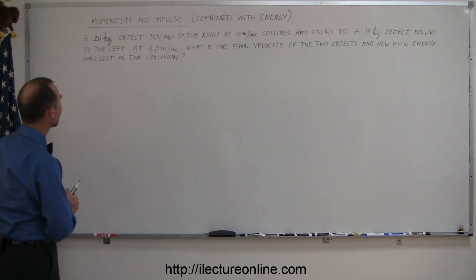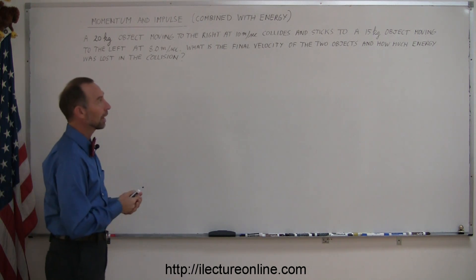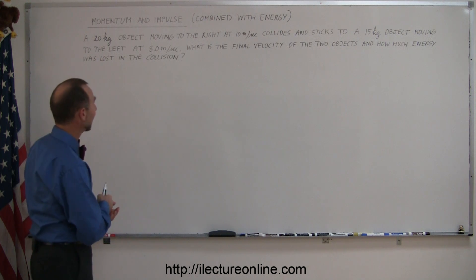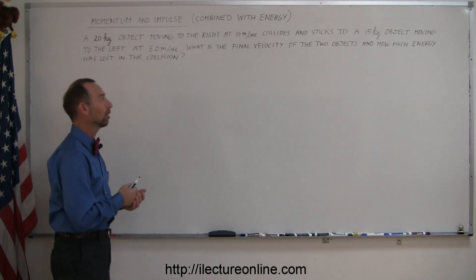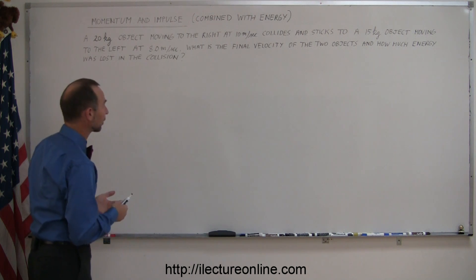So let's read the problem here. It says a 20-kilogram object moving to the right at 10 meters per second collides with a 15-kilogram object moving to the left at 8 meters per second. What is the final velocity of the two objects and how much energy was lost in the collision?